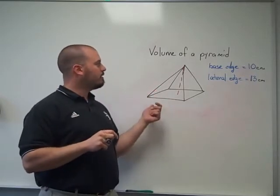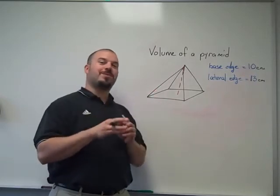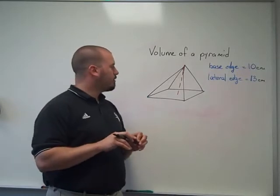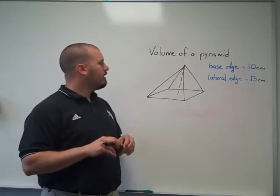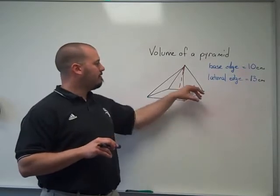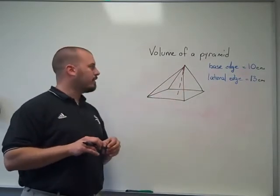and that lateral edges are 13 centimeters. So we're making the assumption that this is a regular square pyramid, and since I'm writing the problem, I get to have that. It's a regular square pyramid, and that means that the base is a square, and that the faces are all isosceles triangles.